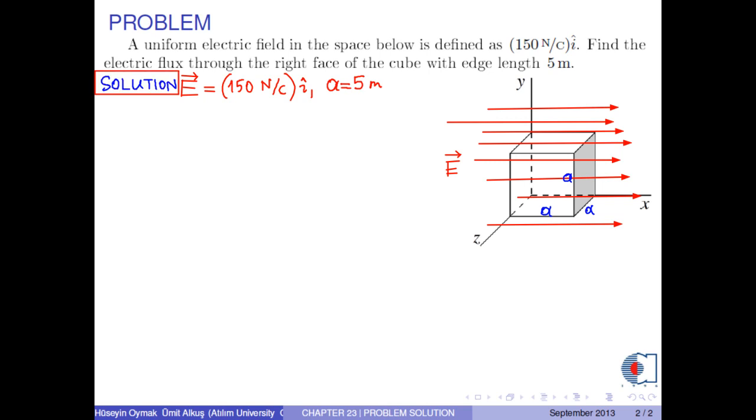Because the system is simple, the electric flux through the right face of the cube is calculated by the formula E dot A, where A is the area vector for the right face of the cube.